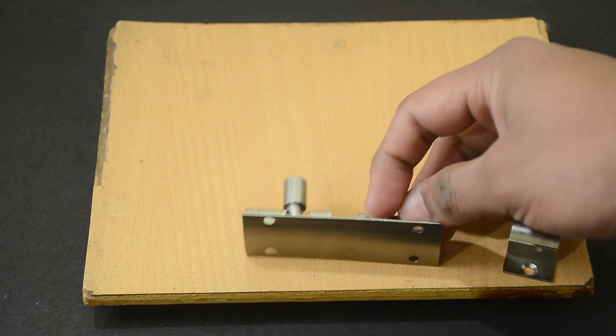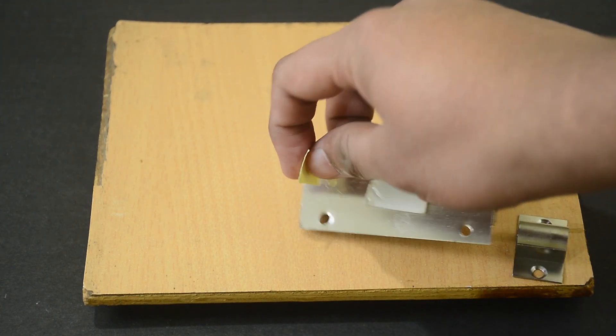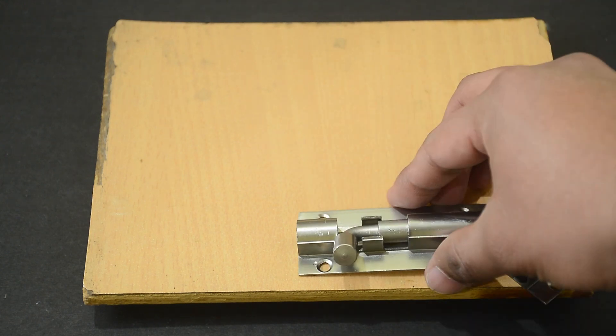Attach the lock in its place. I am using double-sided tape here. You can use screws if you are making something permanent.